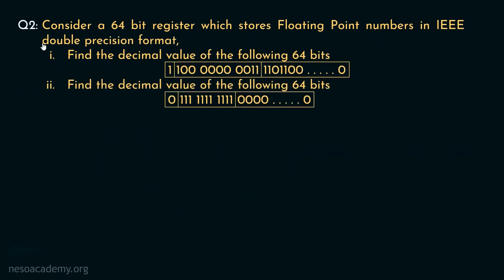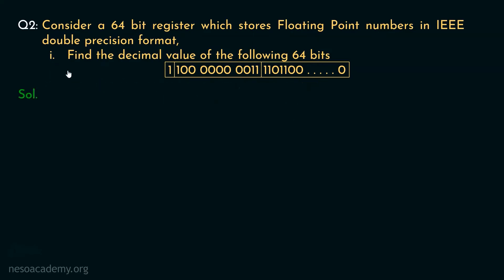Consider a 64-bit register which stores floating point numbers in IEEE double precision format. In case of double precision, 64 bits are required to store floating point numbers. We need to find the decimal values of two given 64-bit patterns. Let's start decoding the first pattern from the exponent part.